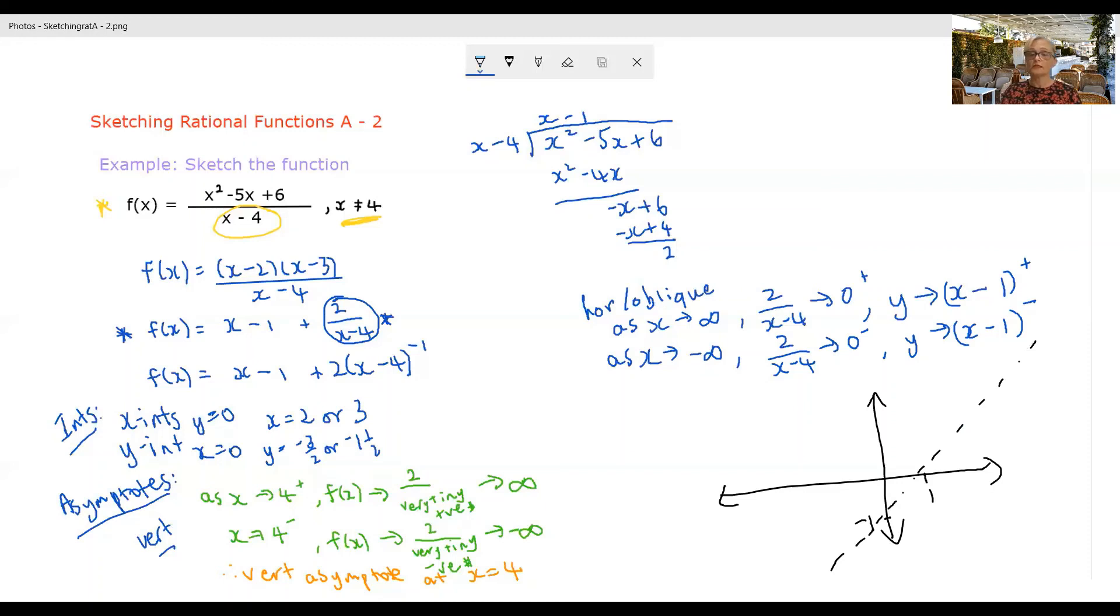And what we've found is as you're tending towards your positive infinity, the function is going to be coming towards this line from above. As you're tending towards x is negative infinity, the line is going to be approaching this but from below. It will be a little bit underneath it.